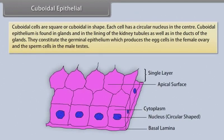Cuboidal epithelial cells are square or cuboidal in shape, and each cell has a circular nucleus in the center. Cuboidal epithelium is found in glands and in the lining of the kidney tubules, as well as in the ducts of the glands. They constitute the germinal epithelium, which produces the egg cells in the female ovary and the sperm cells in the male testes.